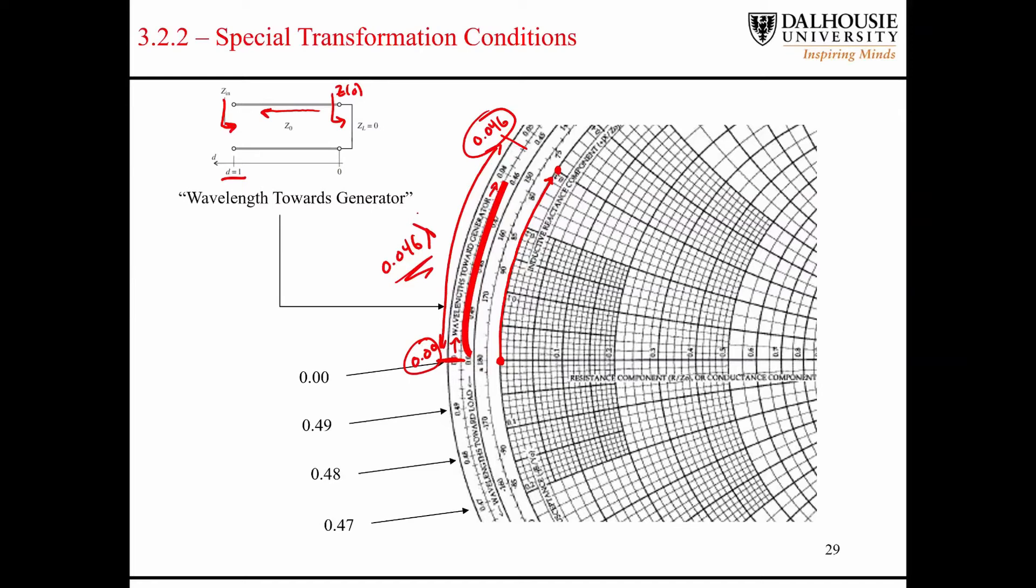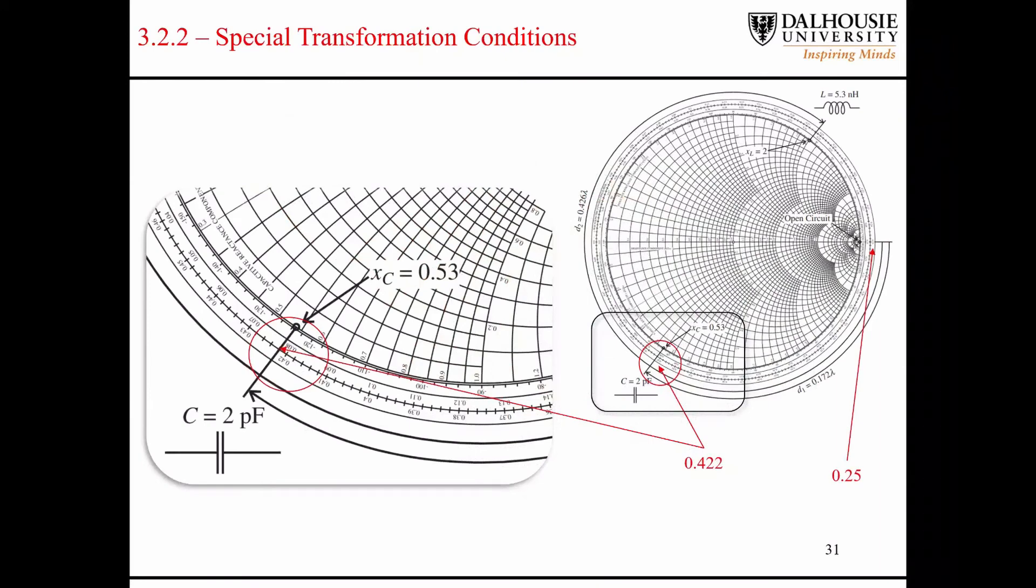And it gives you the fraction of a wavelength that corresponds to that rotation. So this fraction of a wavelength is the length of the transmission line that would be required in order to make that impedance transformation from the point at Z equals 0 to the point at Z equals L. So I hope that's clear.